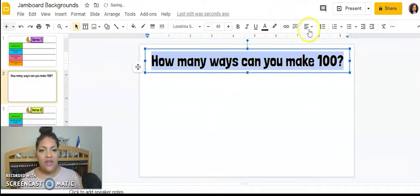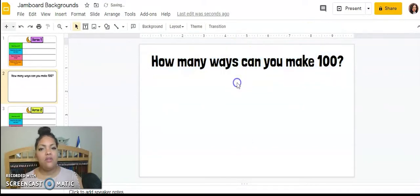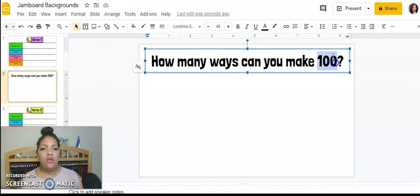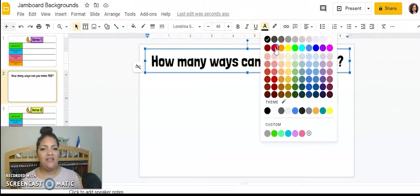So now let's center that up. And then another thing I like to do with alignment, I like to make sure it is right there in the middle. How many ways can you make 100? I'm going to make 100 red to kind of make it stand out.